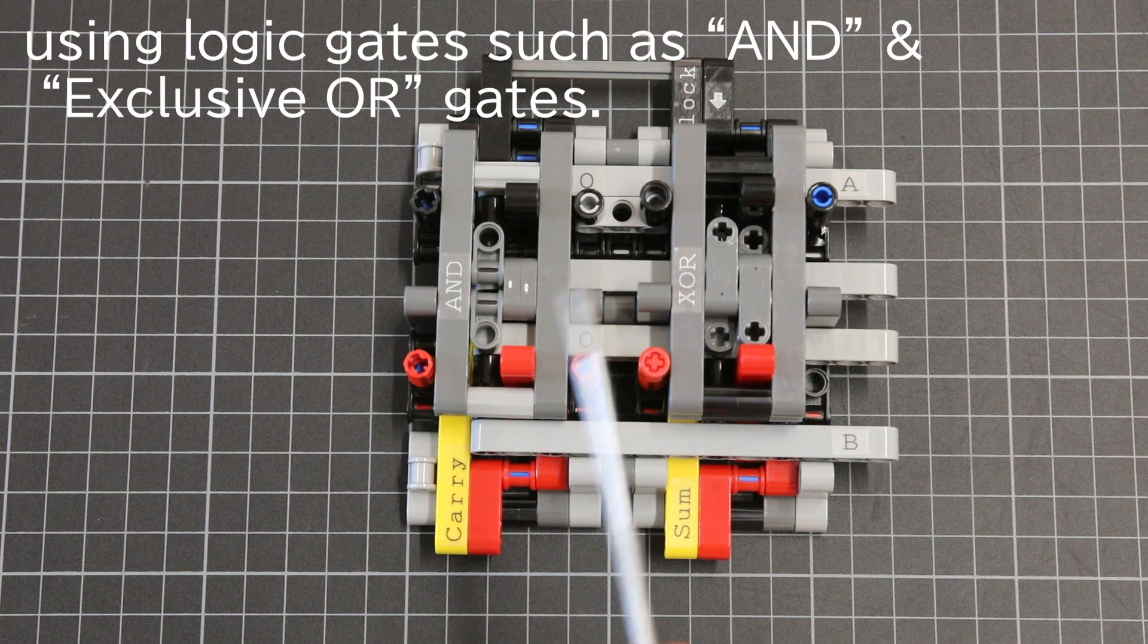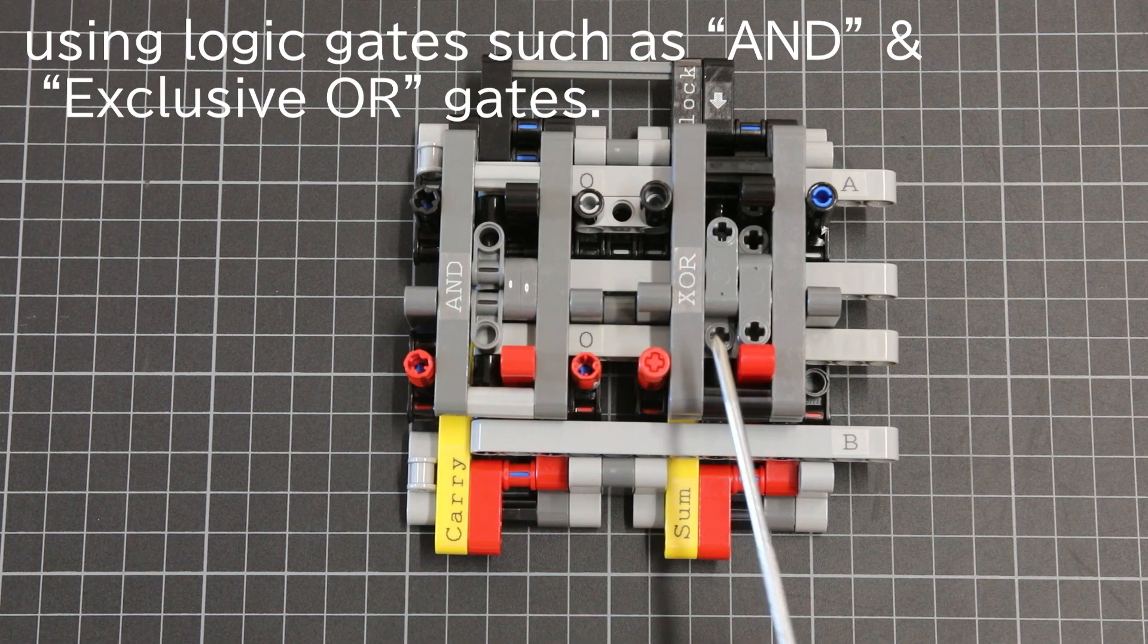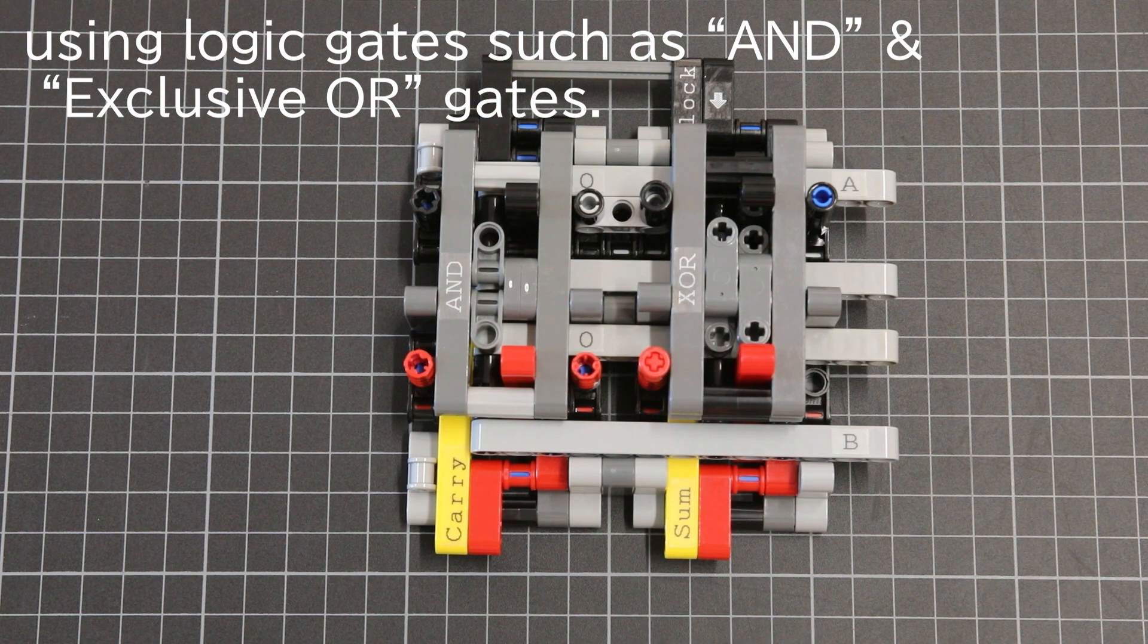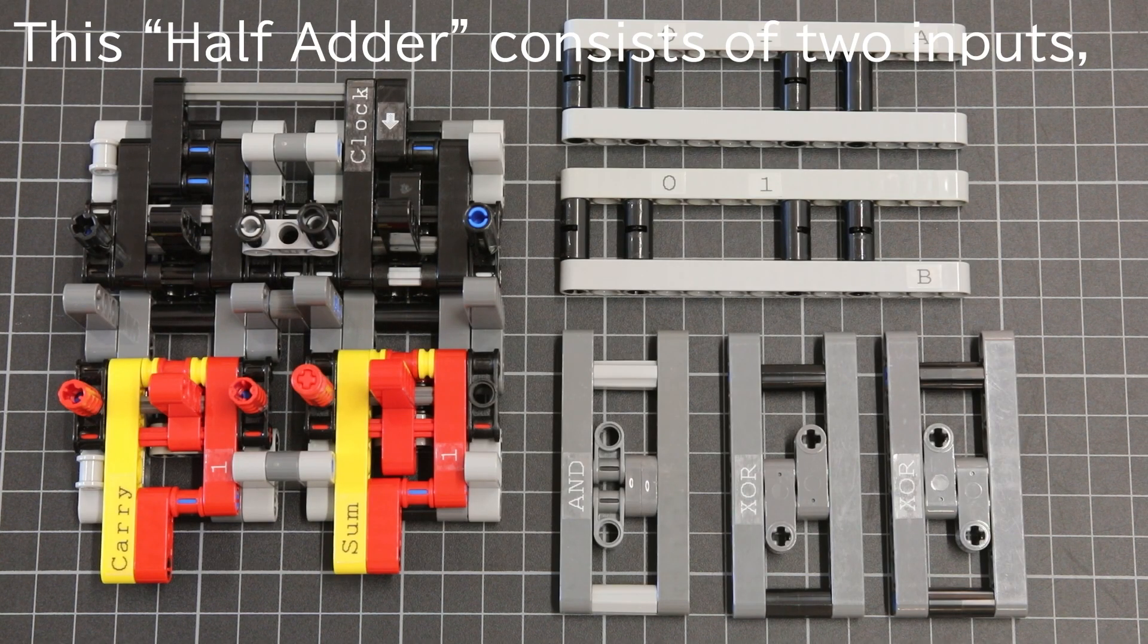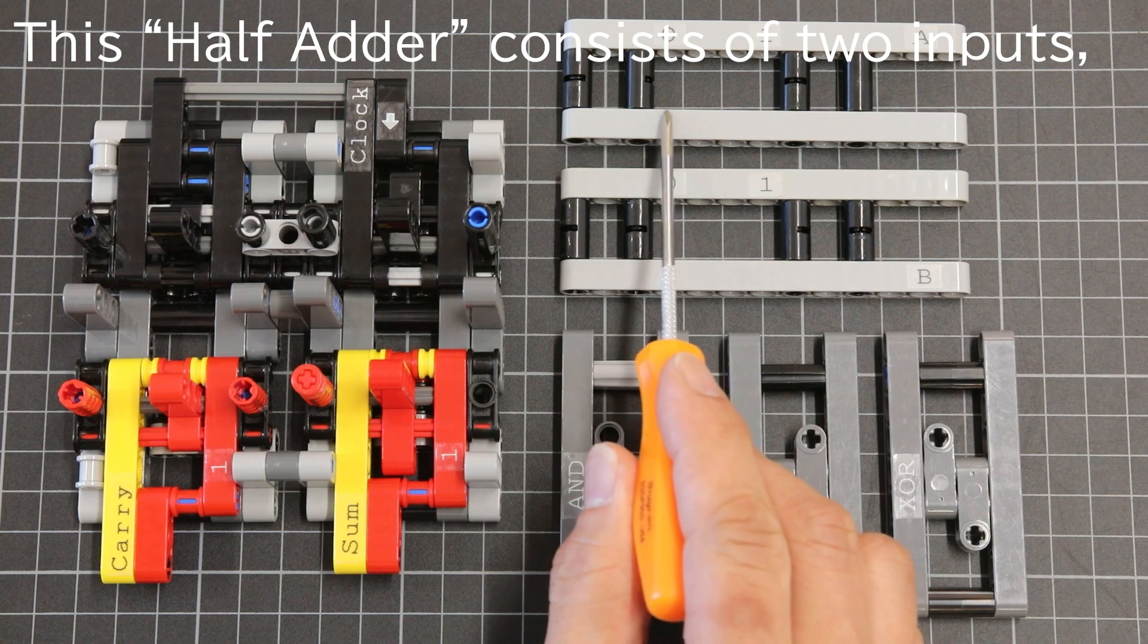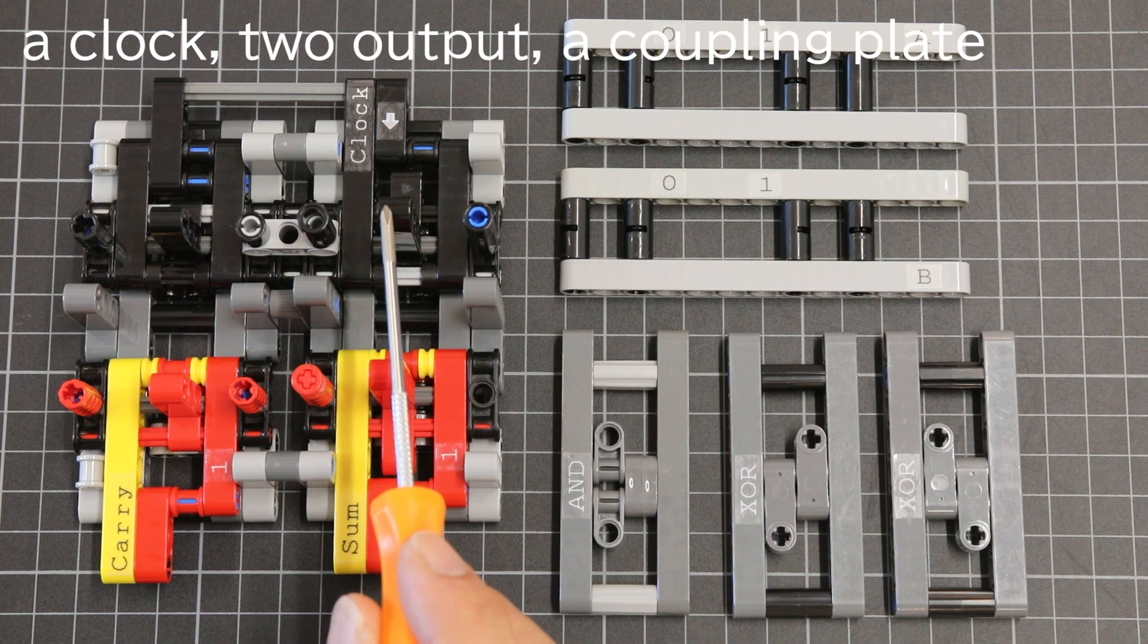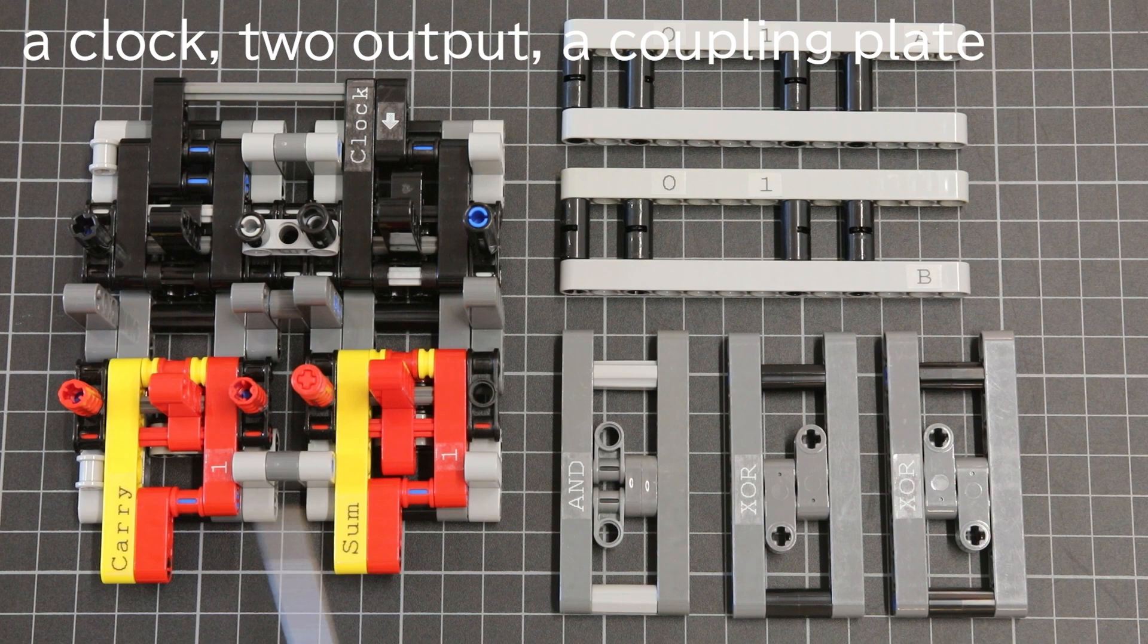The half-adder can be implemented using logic gates such as AND and XOR gates. This half-adder consists of two inputs, a clock, and two outputs.